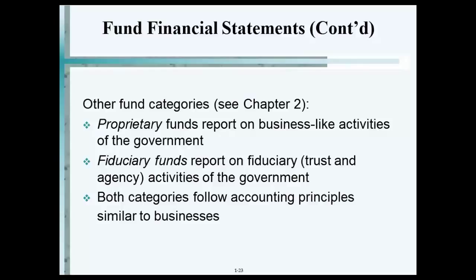And then there are business-type activities, which are classified as proprietary fund activities. So we basically have three types of funds: governmental funds, proprietary funds, and fiduciary funds. Proprietary funds conduct business-type activities — like operation of New Jersey Transit, operation of airports, operation of municipal swimming pools, operation of golf courses. Those are business-type activities.